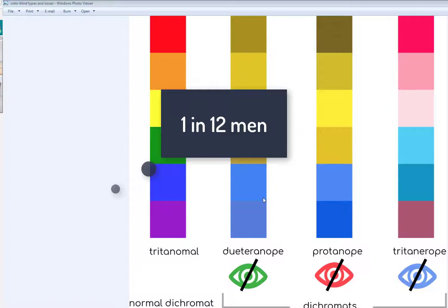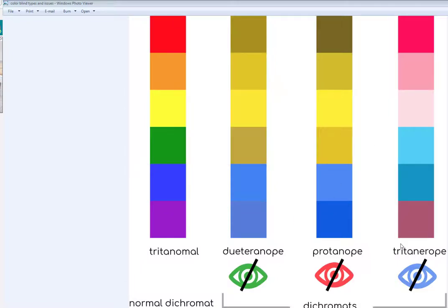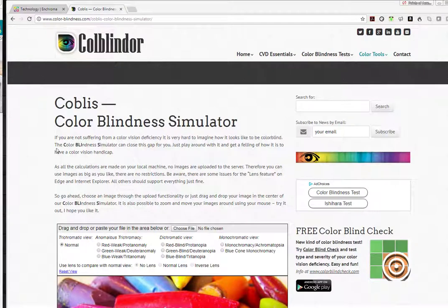What we're going to look at today is a tool that we have available to us on the web to look at how colors are going to appear for people who are colorblind. The tool is called the Color Blindness Simulator.